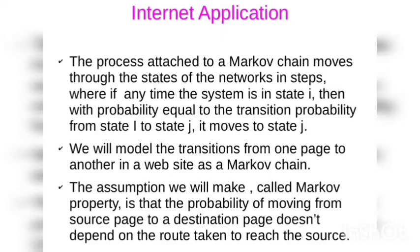We will model this transition from one page to another in a website as a Markov Chain. The assumption we will make, called the Markov Property, is that the probability of moving from a source page to a destination page does not depend on the route taken to reach the source.